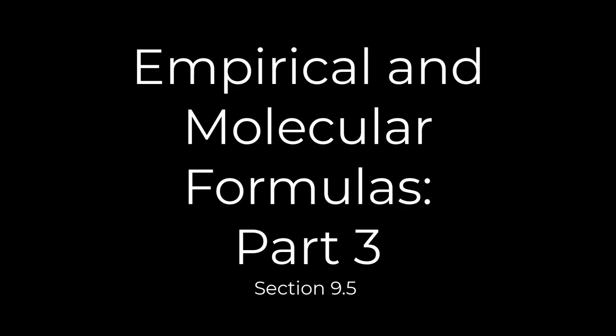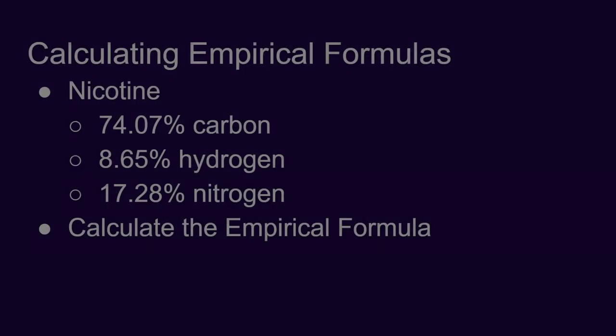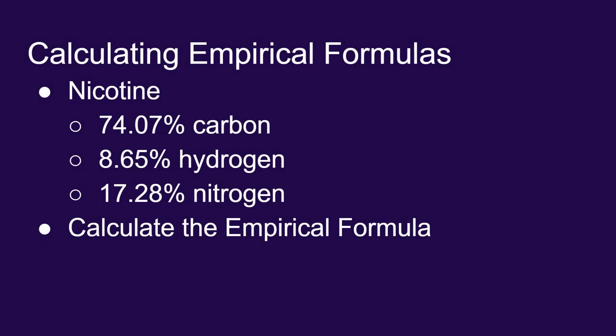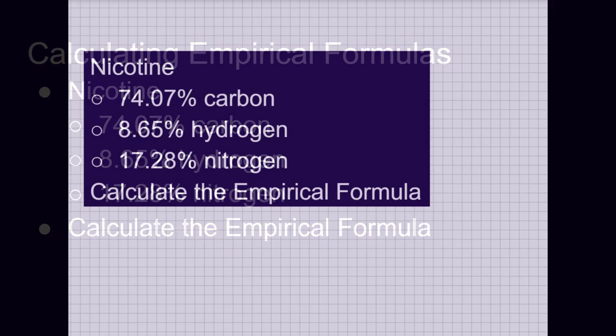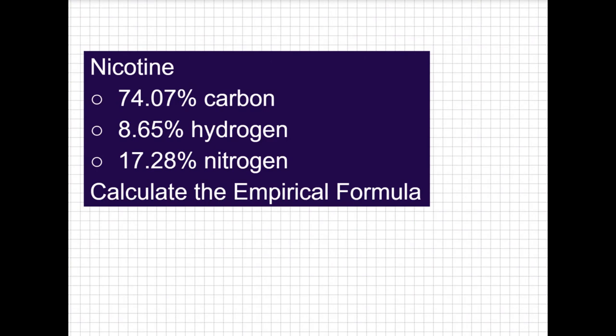Let's do one final example, this time with nicotine. It turns out that 74.07% of the mass of nicotine is carbon, 8.65% is hydrogen, and 17.28% is nitrogen. Let's use this information to calculate the empirical formula. Now, because these are written as percentages, we can just express them as grams.